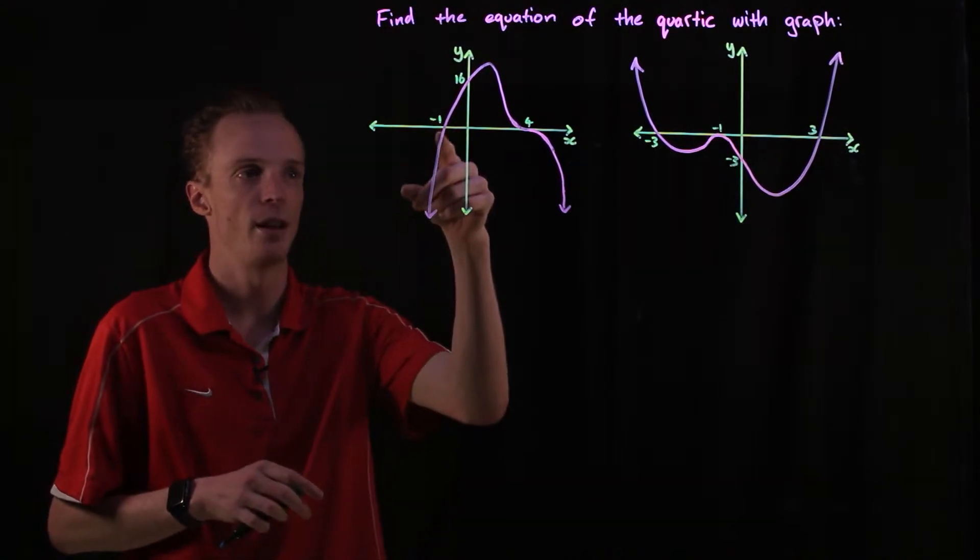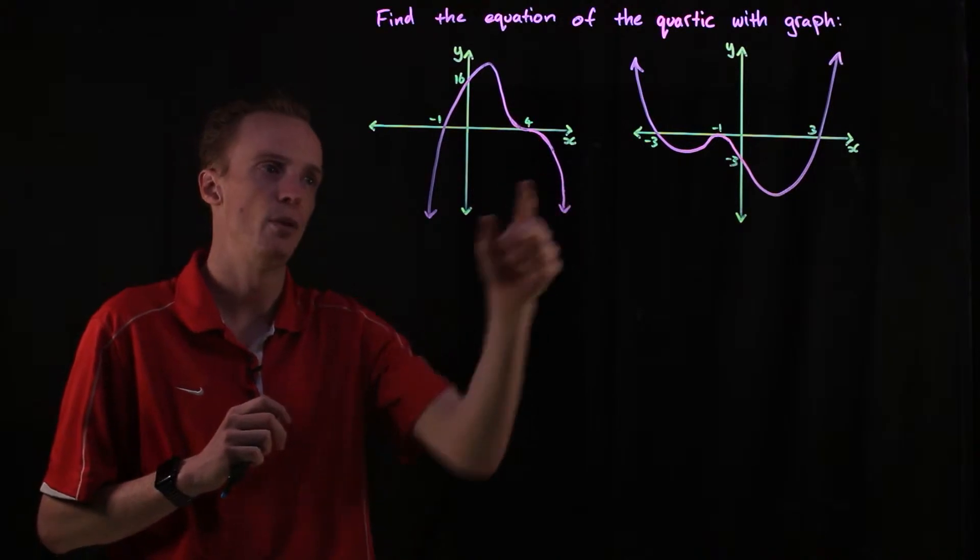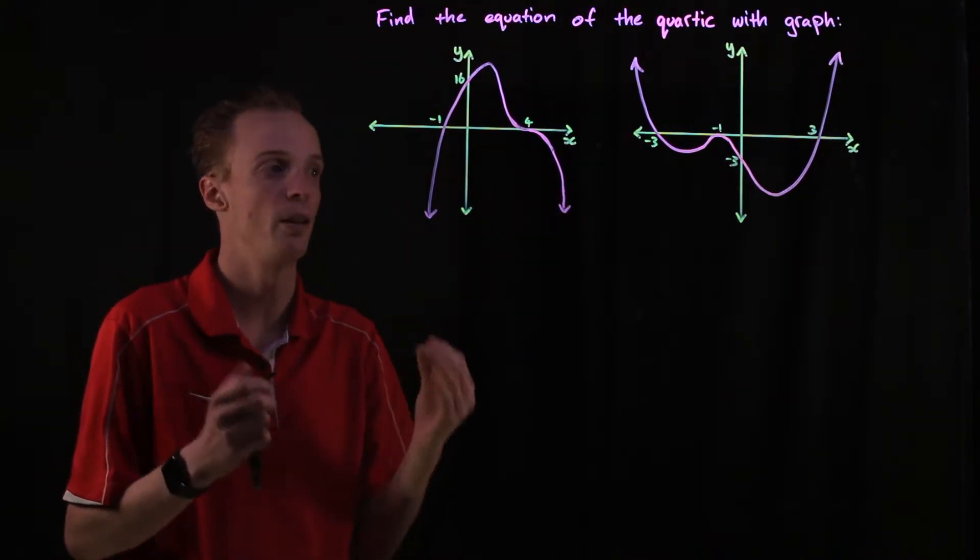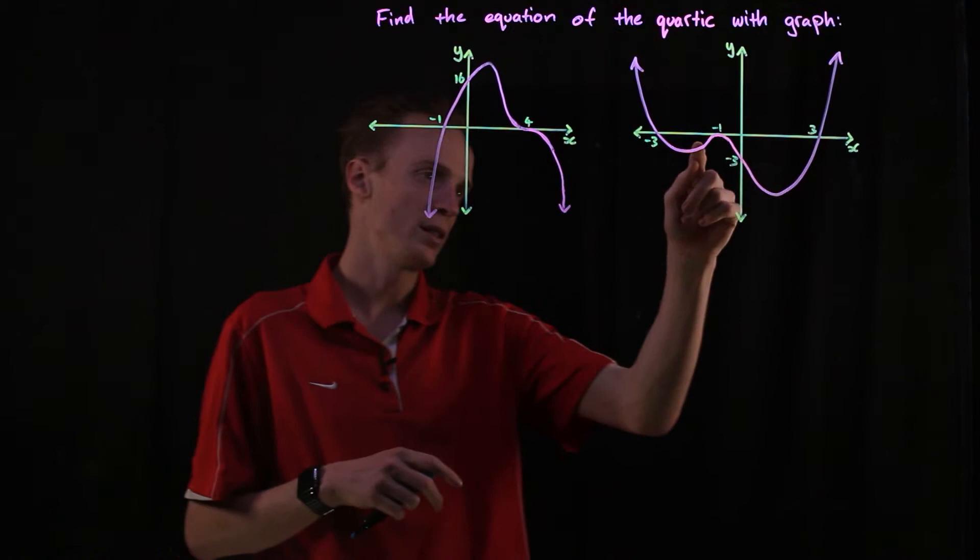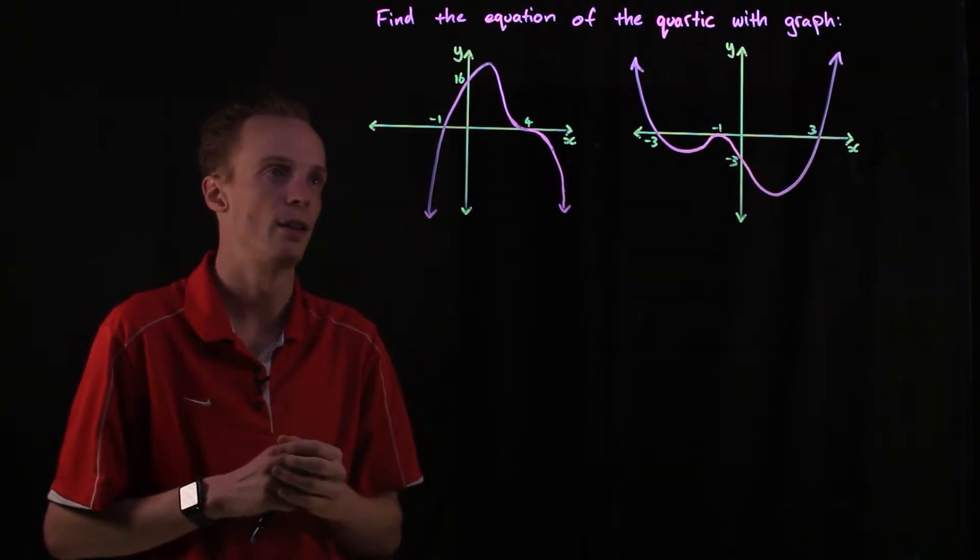For example, when it cuts through here we've just got a linear factor. When it has this stationary point of inflection, we've got a cubic linear factor. When it just touches the x-axis like we've got here, we've got a repeated linear factor.